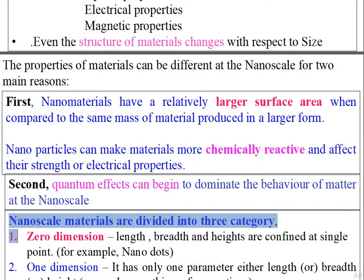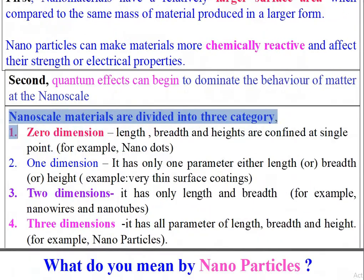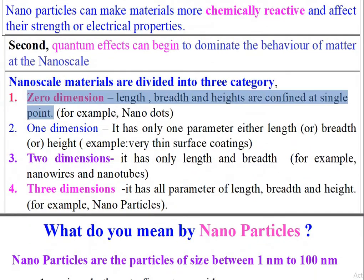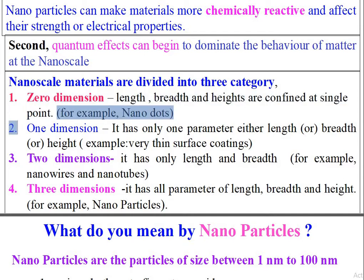Nanoscale materials are divided into three categories. 1. Zero dimension: length, breadth, and height are confined at a single point. For example, nano dots.